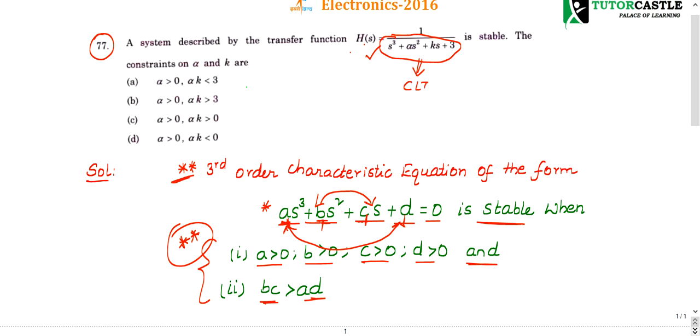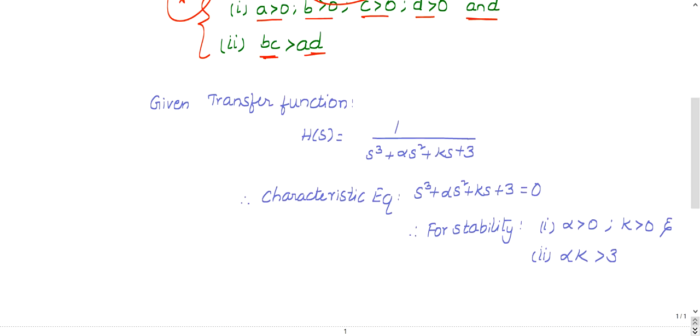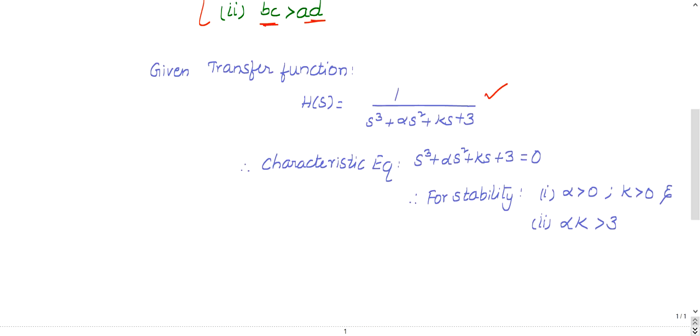Simply take it as a closed-loop transfer function since he hasn't mentioned anything. If you assume this, then this becomes the characteristic equation. So for this characteristic equation to be stable, what should be the condition?